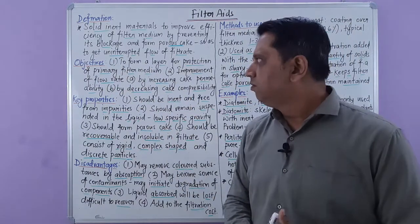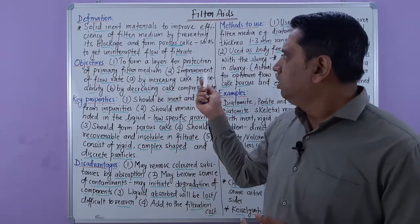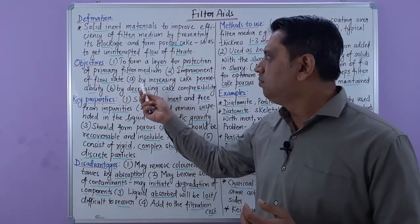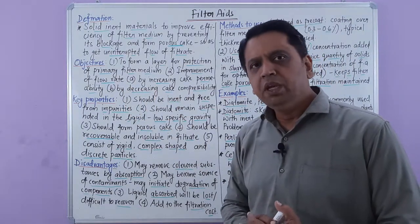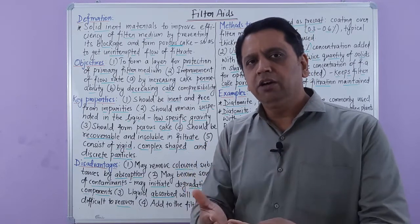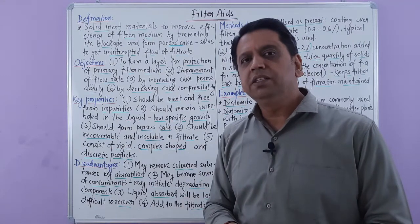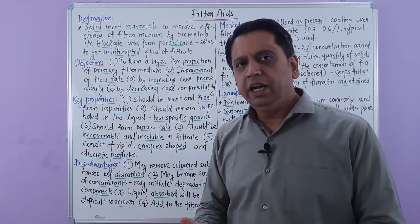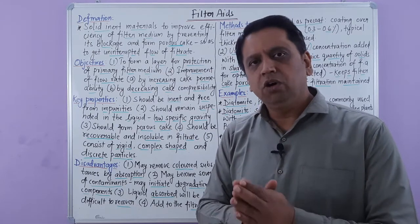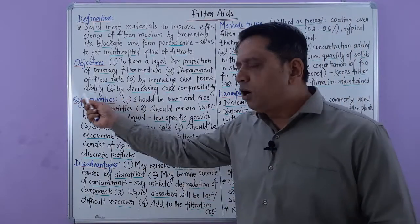What are the objectives of filter aids? The first objective is to form a layer for the protection of the primary filter medium. Another objective is improvement of flow rate, which can be achieved in two ways: by increasing the cake permeability, and by decreasing the cake compressibility. Decreasing compressibility means the cake will be more porous, so filtration will continue uninterrupted throughout the process.